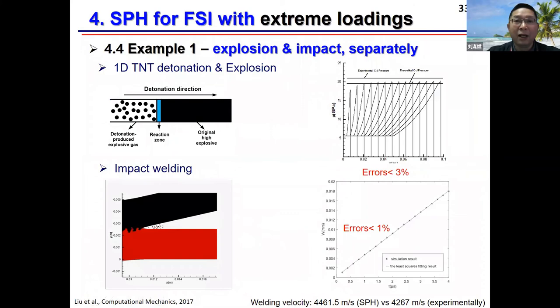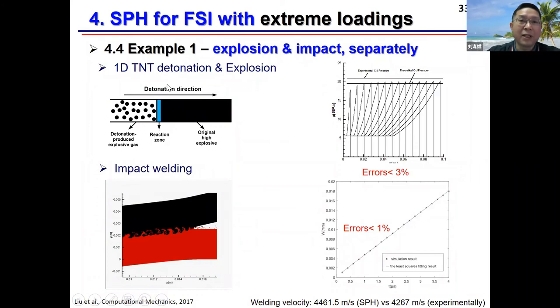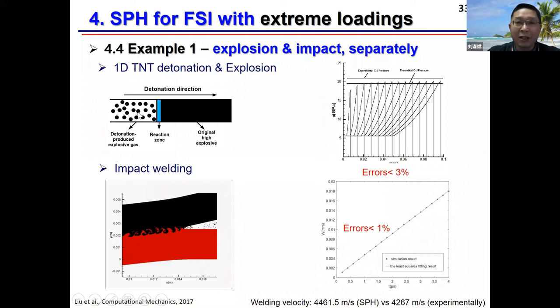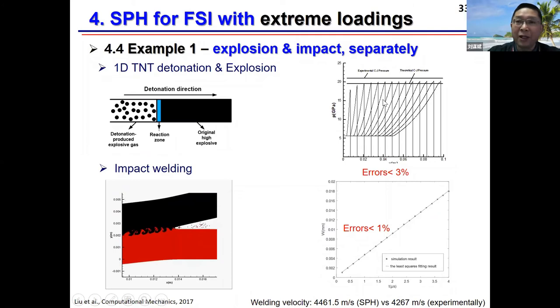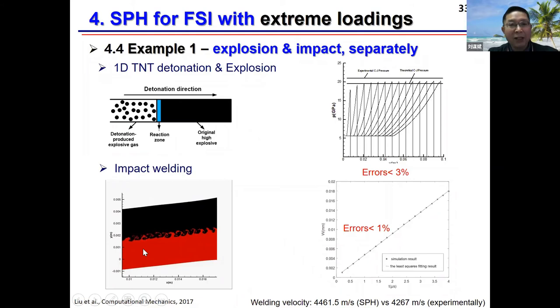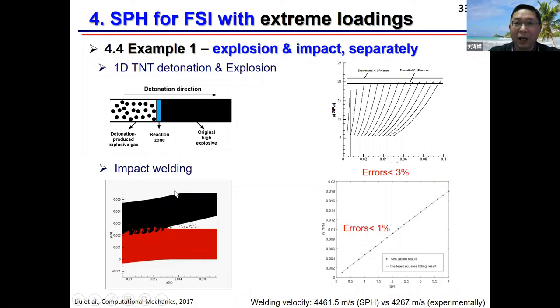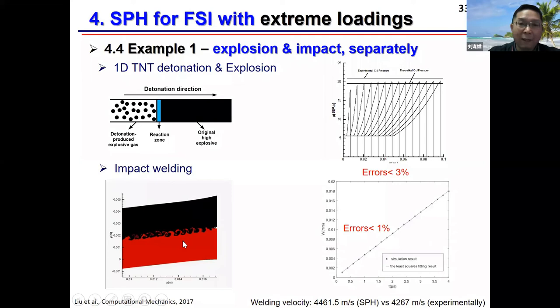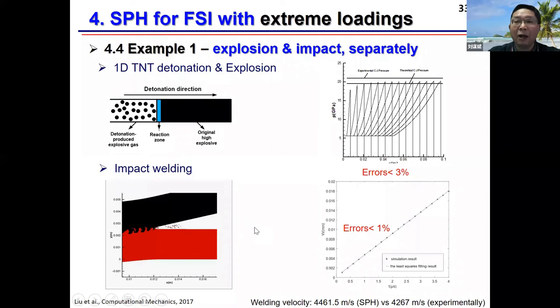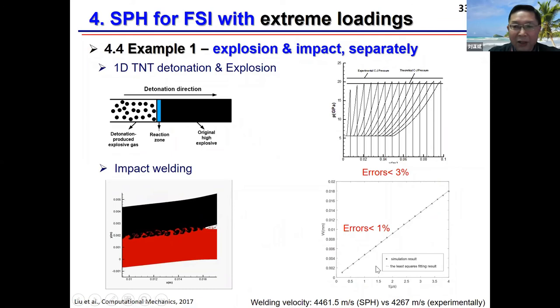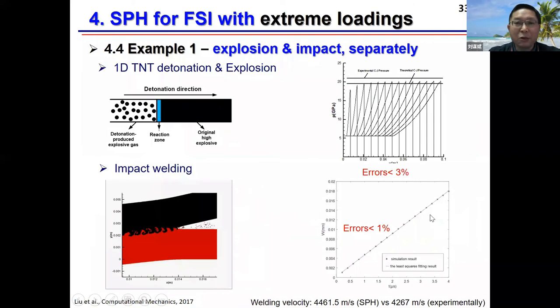Here are several examples. The first is a one-dimensional TNT detonation — the detonation propagates from the left end rightward, and the pressure profile converges to the experimentally determined Chapman-Jouguet pressure. The second validation case is impact welding, involving a flyer plate impacting a substrate at around 1000 meters per second, and the obtained impact velocity is very close to experimental results. These two cases validate explosion and impact separately.